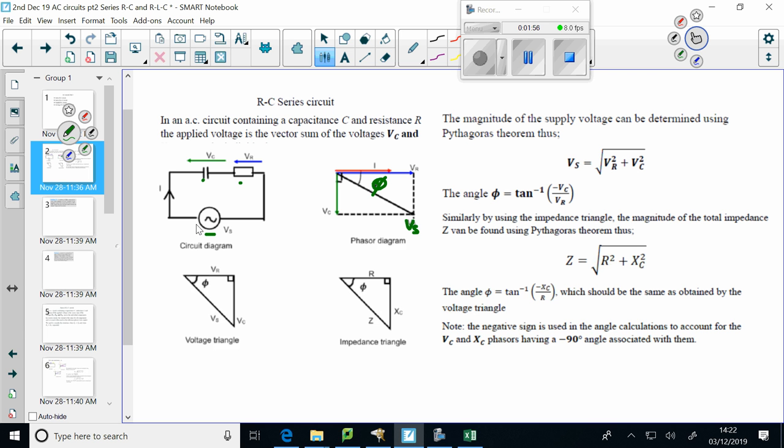So, we can separate from that what we call the voltage triangle, VR on the horizontal, VC negatively downwards, VS on the hypotenuse, and we can get the angle phi from that. We can also get the angle phi from the impedance triangle with the resistance on our horizontal, the capacitive reactance on the negative vertical axis, and the impedance Z on the hypotenuse.